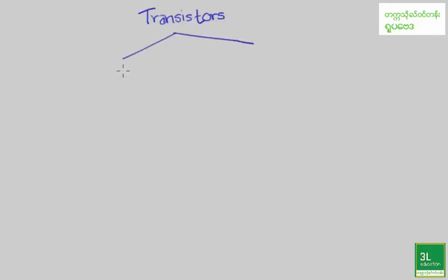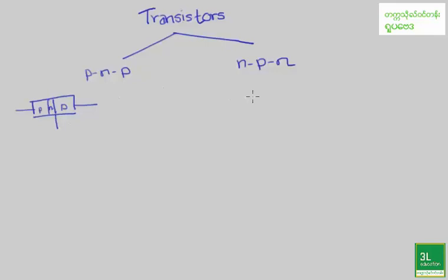We are going to use PMP transistor and NPM transistor. PMP transistor is PTA. We are going to use PTA and NPM transistor, and PTA and PTA.